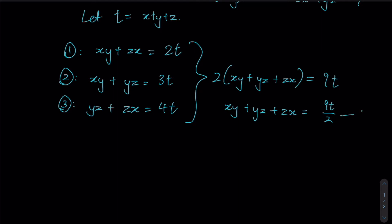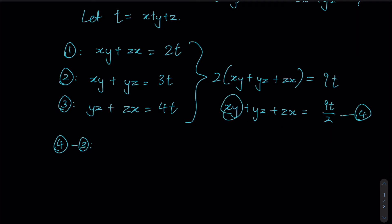If we take equation 4 minus equation 3, yz and zx cancel, leaving us with simply xy. So xy equals 9t over 2 minus 4t, which gives us t over 2.